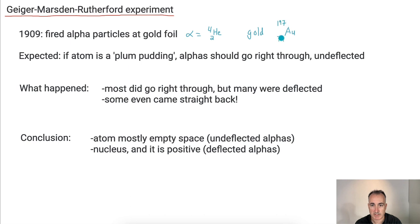Remember what those numbers mean. 79 tells you the number of protons. 197 tells you the number of nucleons. So that means 197 minus 79, that's 118, that's the number of neutrons. So this is gold and we've got an alpha particle. They expected if the atom is a plum pudding, the alphas should go right through undeflected, like I just showed you.